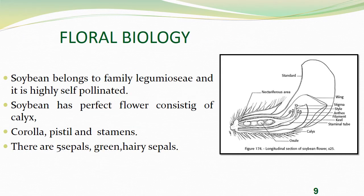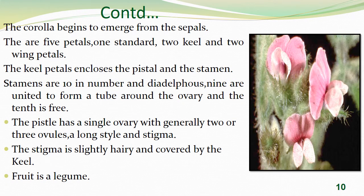Floral biology: soybean belongs to family Leguminaceae and is a highly self-pollinated crop. It has a perfect flower consisting of calyx, corolla, pistil, and stamens. It has five sepals that are green and hairy. The corolla begins to emerge from the sepals; there are five petals — one standard, two keel, and two wing petals.